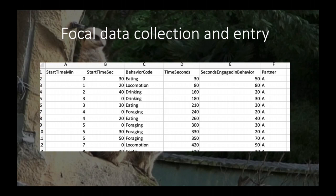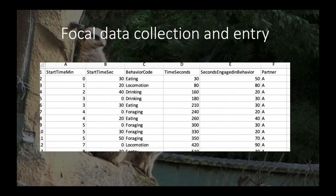We can calculate the seconds that they were engaged in each behavior by hand or in Excel. In this example, they started eating at 30 seconds and then started walking at 80 seconds, so the seconds engaged in eating was 50 seconds. You'll also have a column for partner — put your name and your partner's name in there.